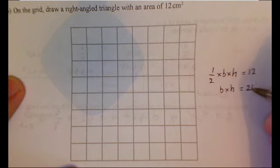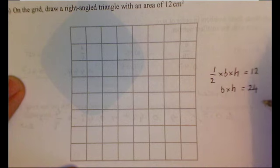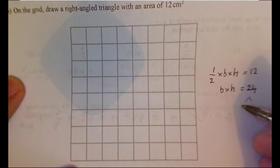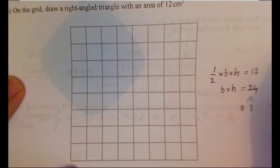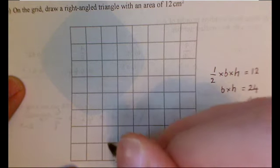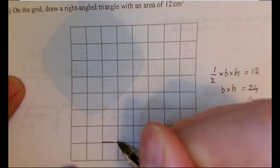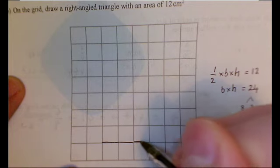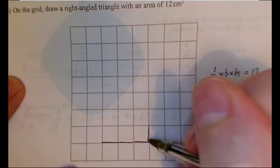So what are the factors of 24? Well, I could use 12 and 2, but I can draw that on here. And 8 by 3, I could. 8, 3 is 24, aren't it? So if I draw a triangle that's 8 high and 3 wide. So here's my 3 wide and 8 high.